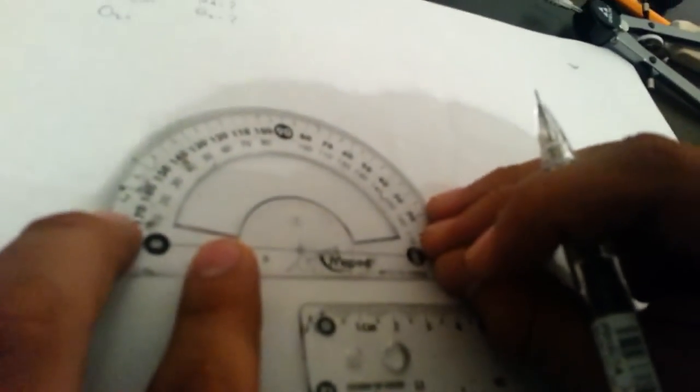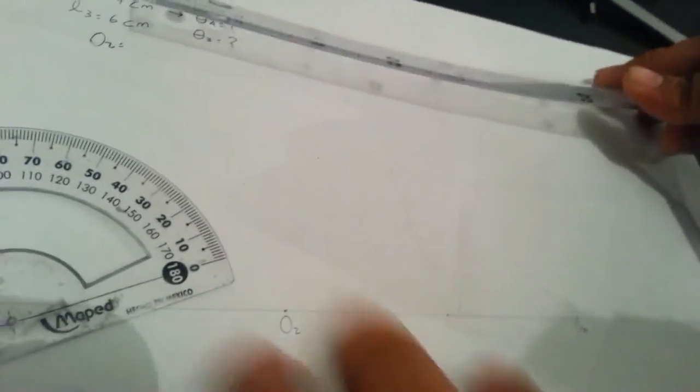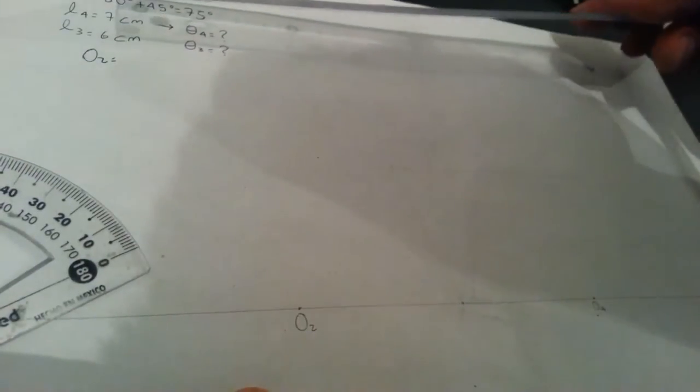After, you have to measure 75 degrees for the link O2, which measures 5 cm.